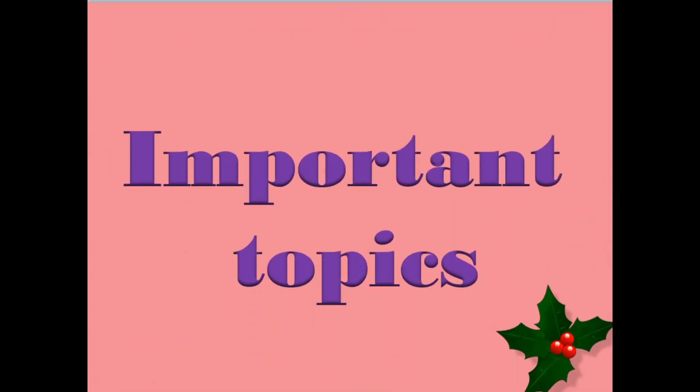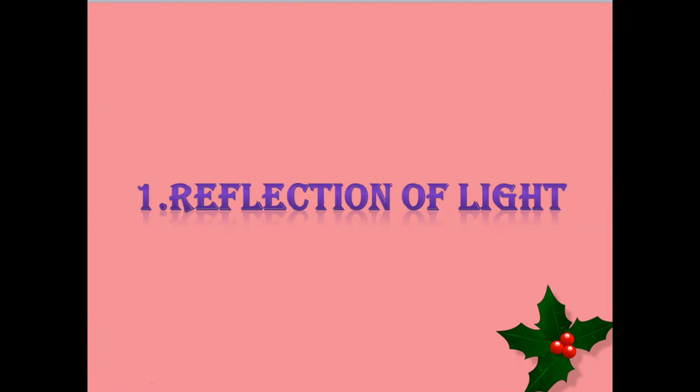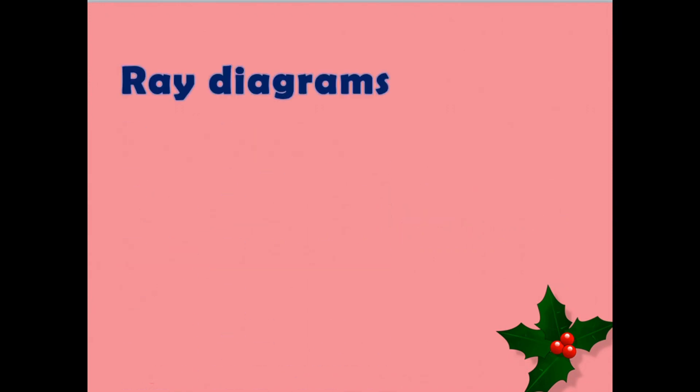Now let's go for important topics in each lesson. The first chapter is Reflection of Light at Curved Surfaces. This is one of the easiest and most important chapters in the physics paper. Ray diagrams are very important. For ray diagrams, you should also read the total lab activity which is about observing the type of images and measuring the object distance and image distance from the mirror.